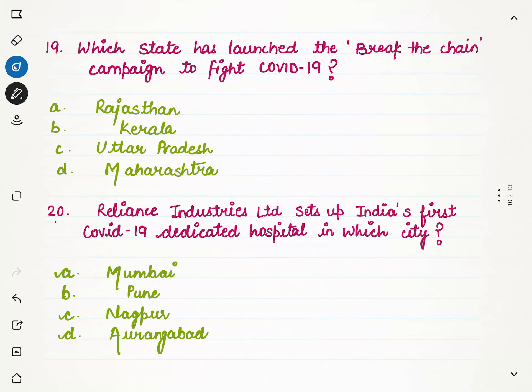Which state launched the Break the Chain campaign to fight COVID-19? This campaign was started to protect people from coronavirus — so that people would minimize contact with each other. The correct option is B, because since the first case came in Kerala, Kerala started the Break the Chain campaign to fight COVID-19. So our correct option is Kerala.